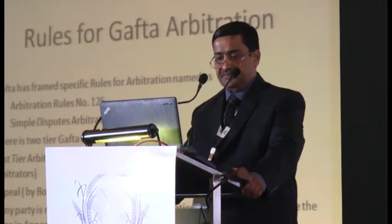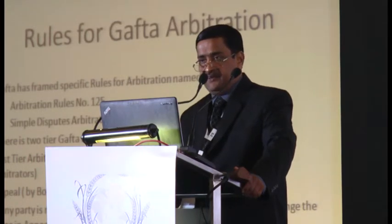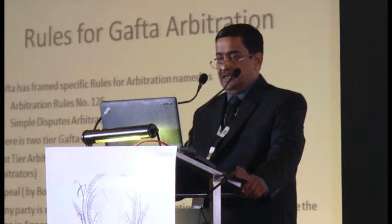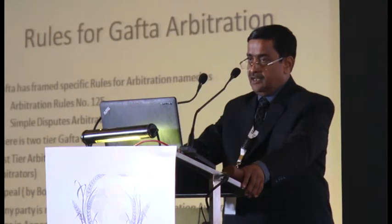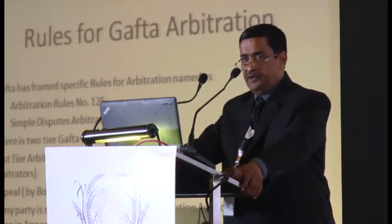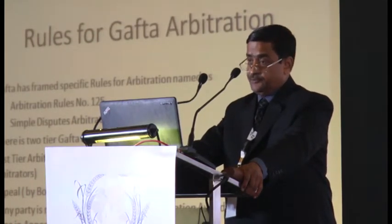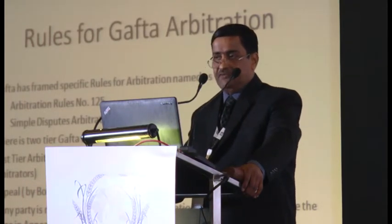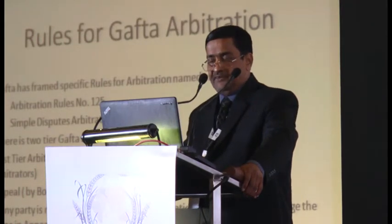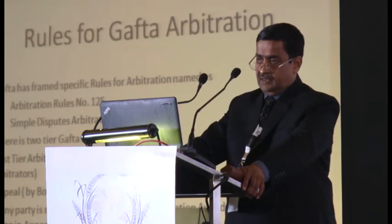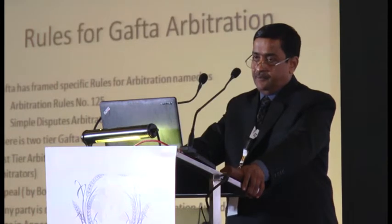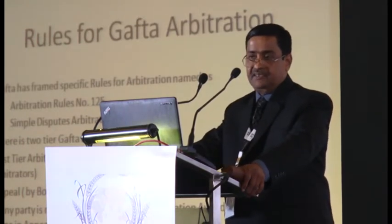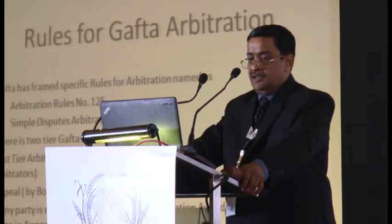GAFTA has a two-tier arbitration service. In the first tier, when you have a dispute you give a notice of arbitration to start the proceedings. The dispute can be decided by a sole arbitrator, or by a tribunal comprising three arbitrators. If you want a sole arbitrator — which is less expensive — both parties must agree. If they don't agree, there cannot be a sole arbitrator. The sole arbitrator is appointed by GAFTA. If one party does not agree for sole arbitration, the tribunal will comprise three arbitrators — the claimant appoints one, the respondent appoints one, and GAFTA appoints the chairman.